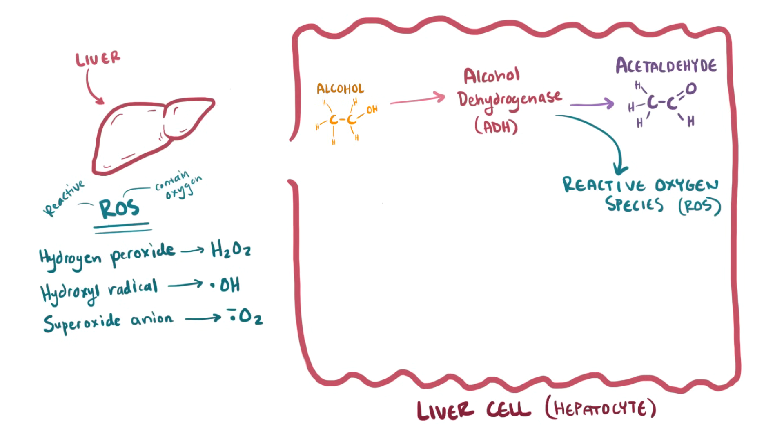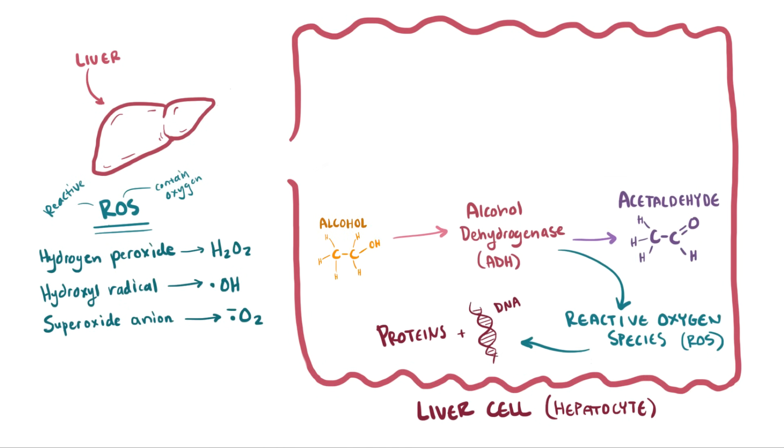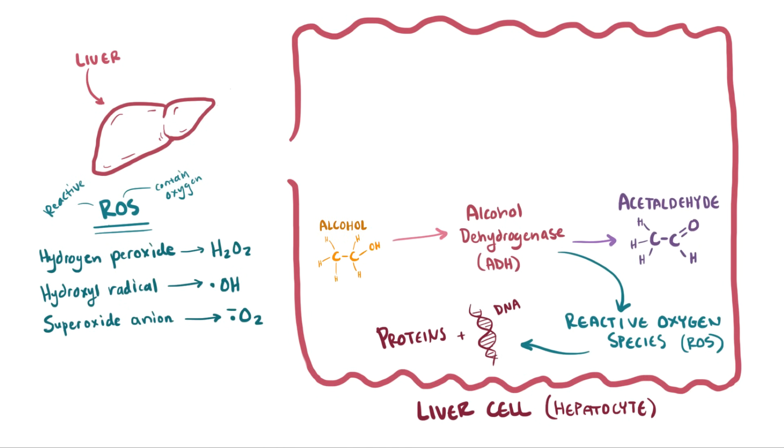These reactive oxygen species react with different components of the hepatocyte, like proteins and even DNA, and this process can cause serious damage to the cells. Besides producing reactive oxygen species, now we've also got acetaldehyde to worry about, and this compound can bind to macromolecules, enzymes, the cell membrane, and all sorts of other compounds inside the cell.